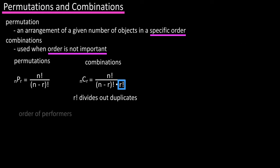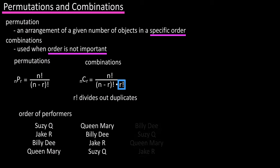For instance, if the order of the four performers were listed here, and we just reversed the order here, or mixed up the order here. In permutations, these are different, because the order is important, but in combinations, these are the same, because the order is not important.